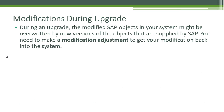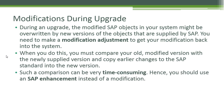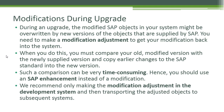Repairing an SAP object in a customer system is also called a modification. During an upgrade, the modified SAP object in your system might be overwritten by new versions of objects supplied by SAP. You then need to make a modification adjustment to get your modification back into the system, comparing your old modified version with the newly supplied version. Such a comparison can be very time-consuming, so you should use an SAP enhancement instead of a modification.